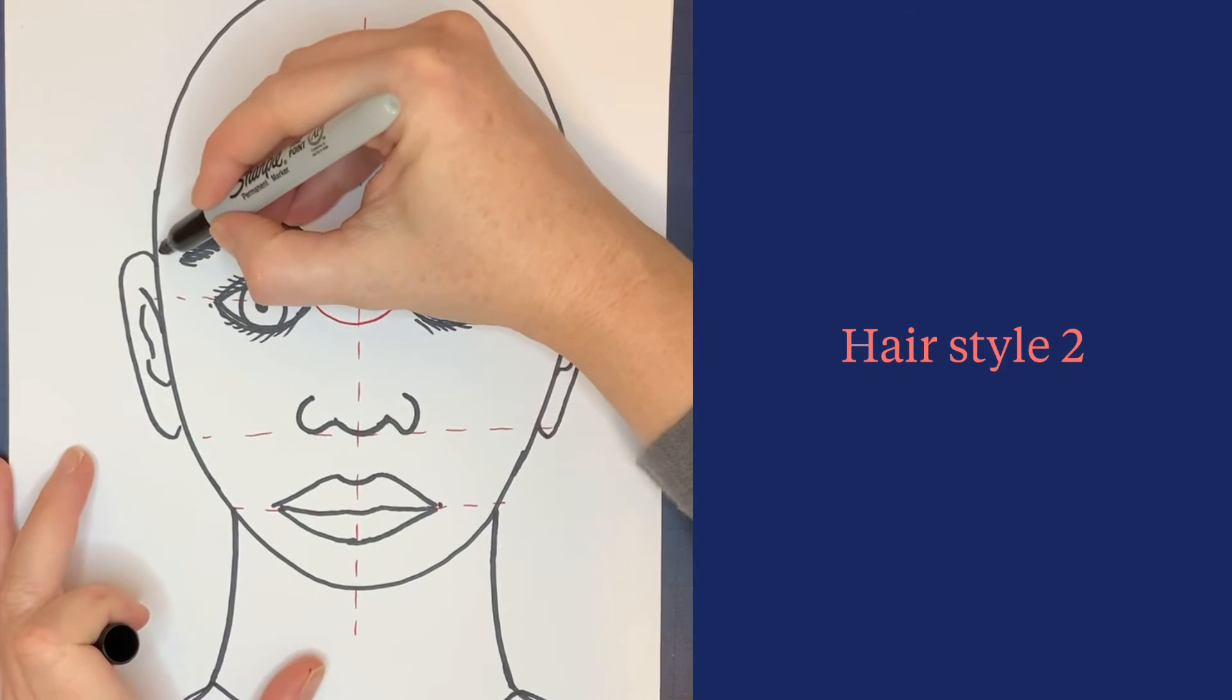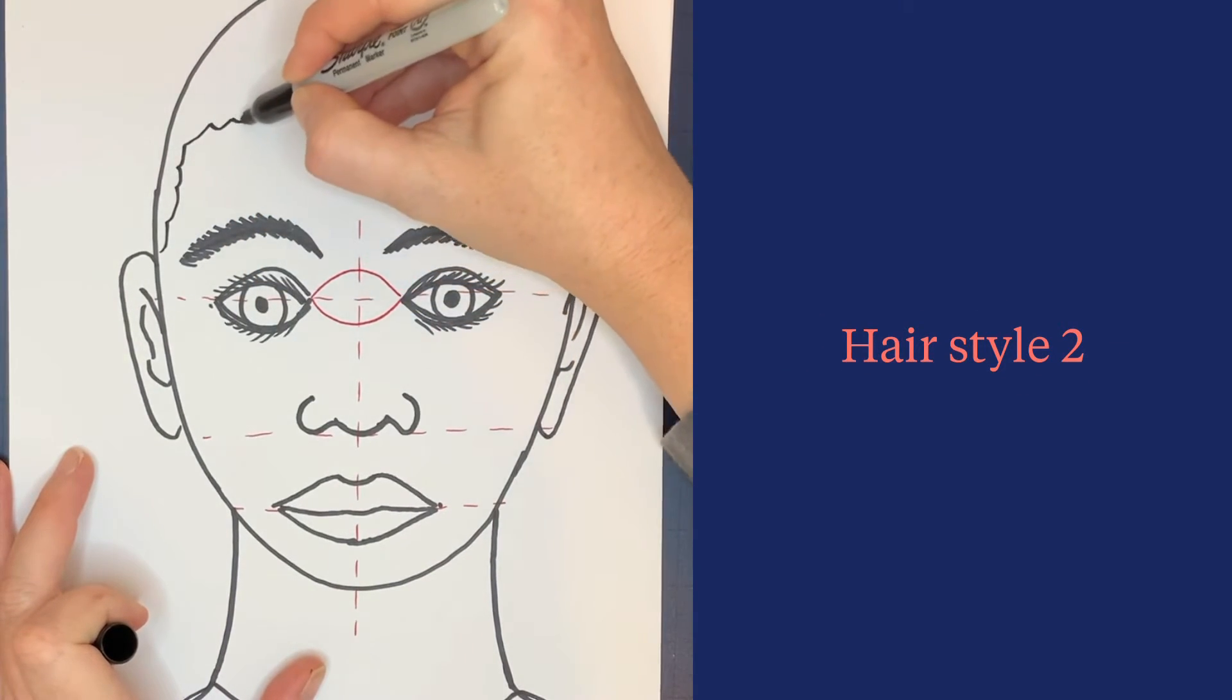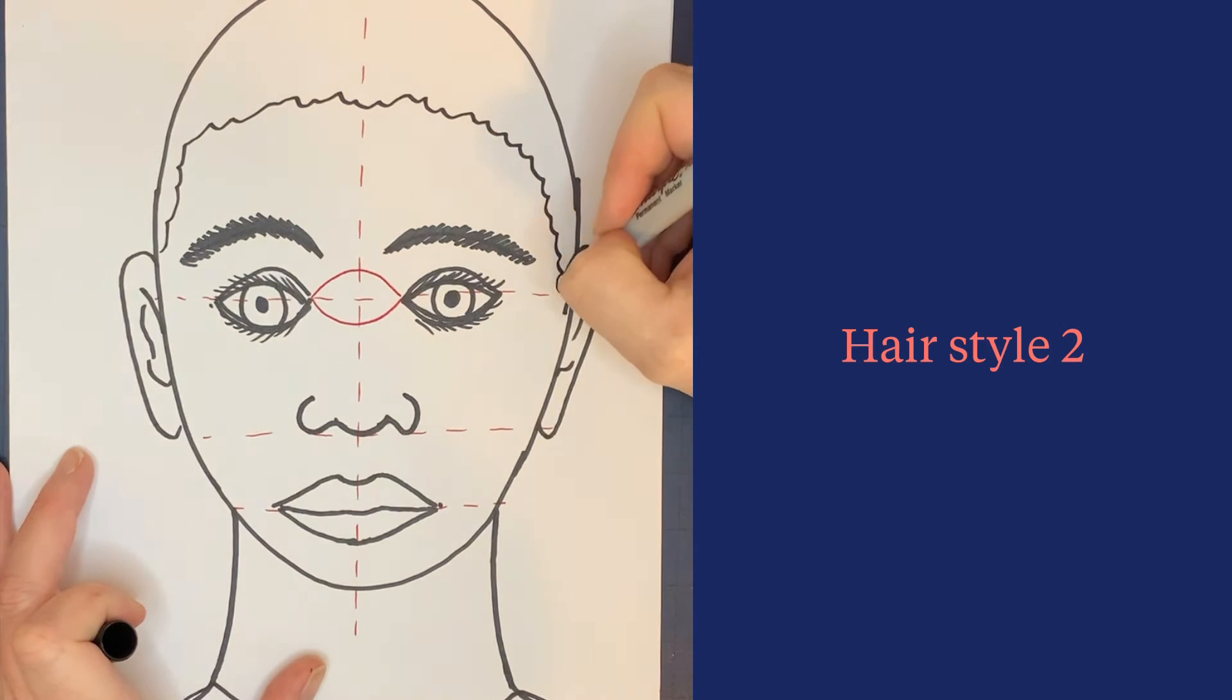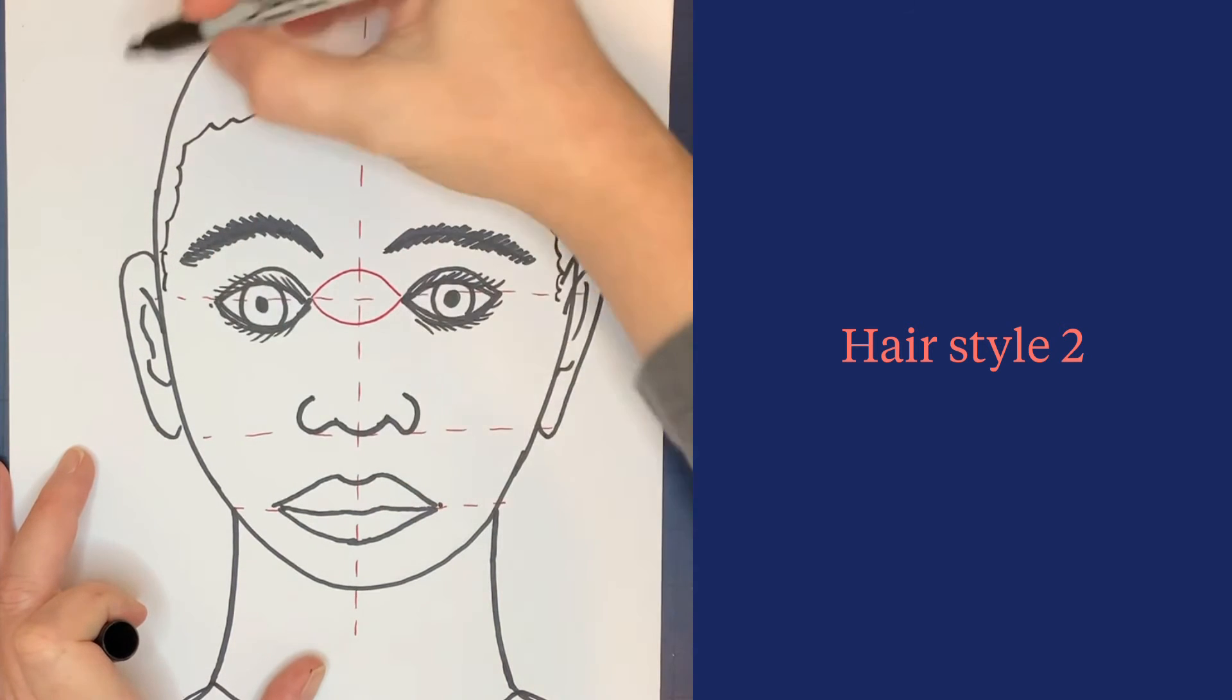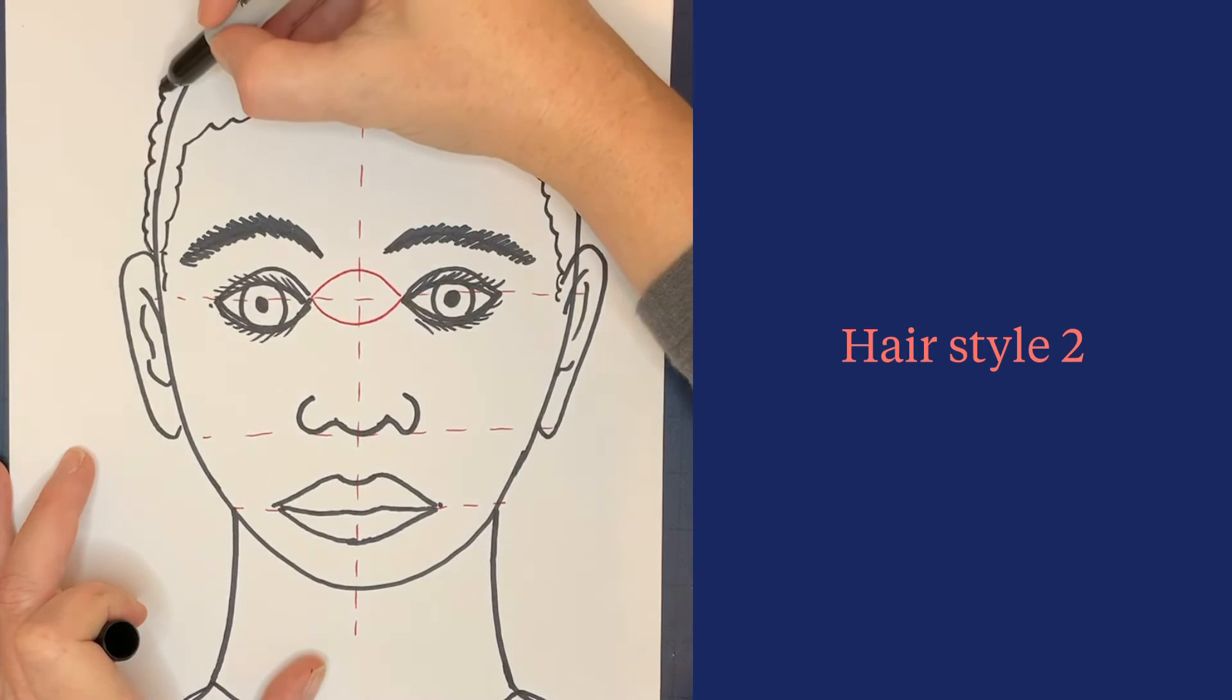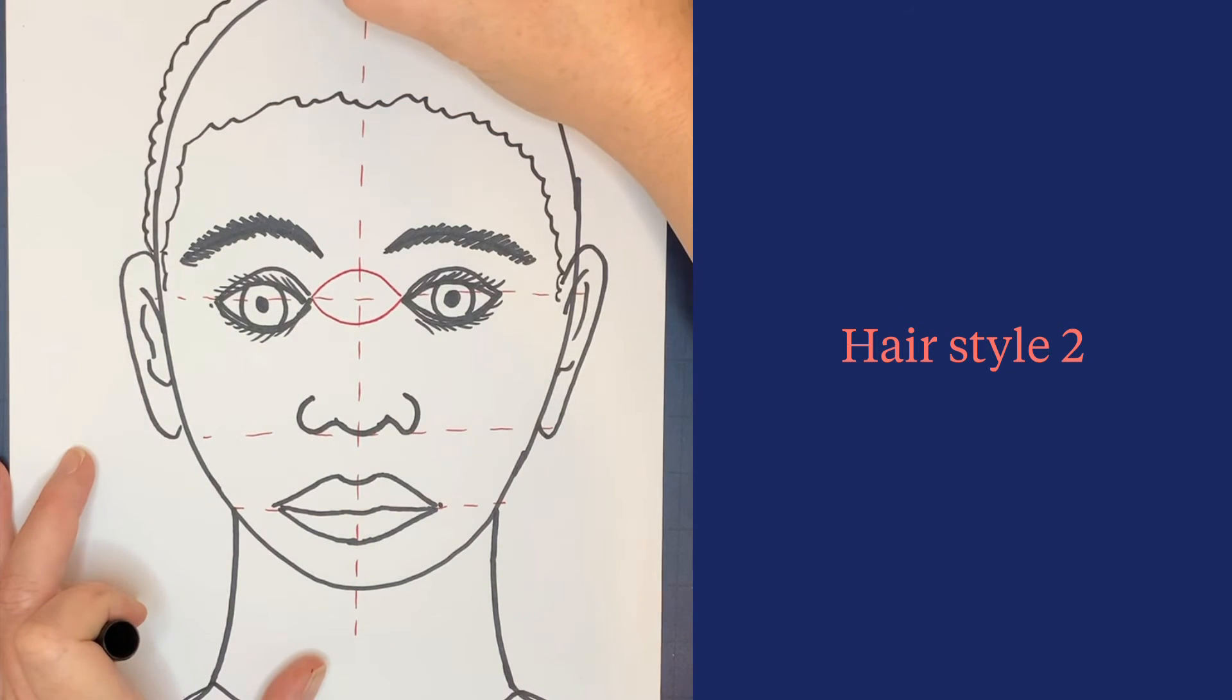Hairstyle number two is a very short hairstyle. Come up and put a curved line all the way around your forehead, then add a little bit in front of your ears. Come up out of the oval shape and make sure the shape you're creating is a good shape for a head.